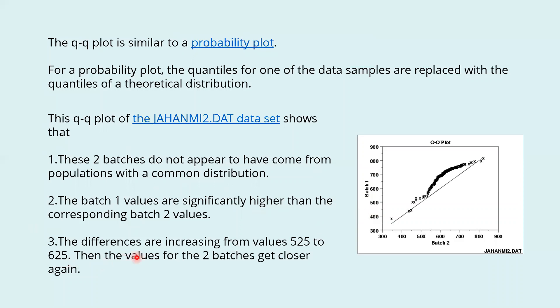The differences are increasing from value 525 to 625, then the values for the two batches get closer again.